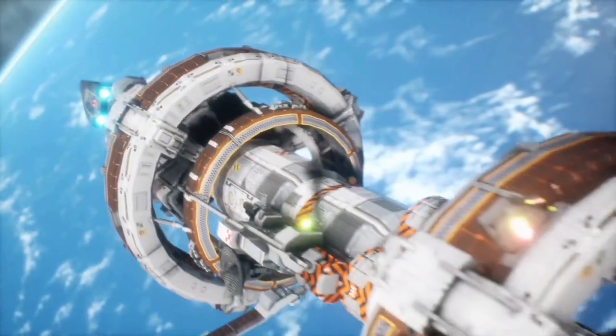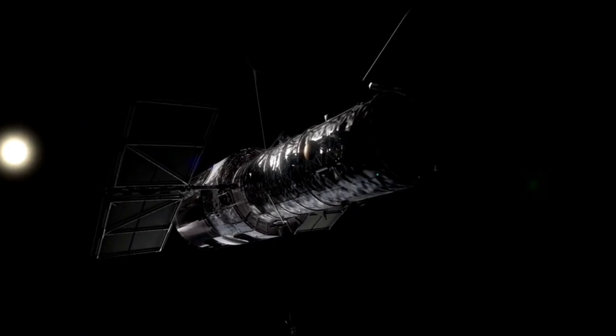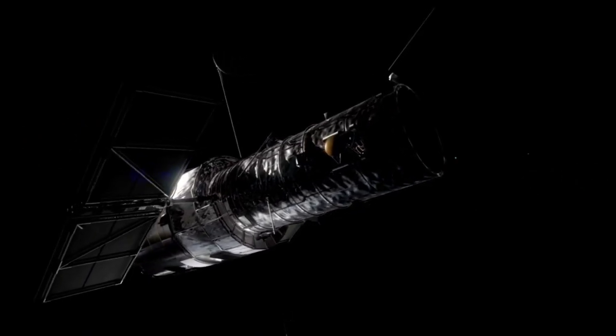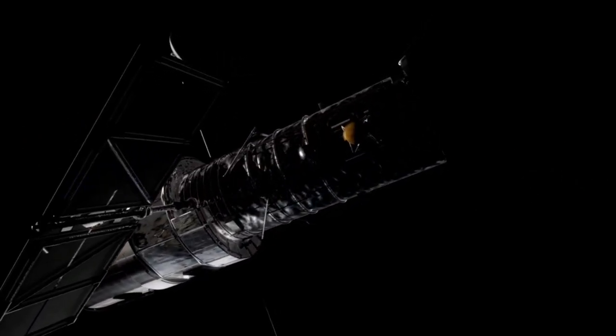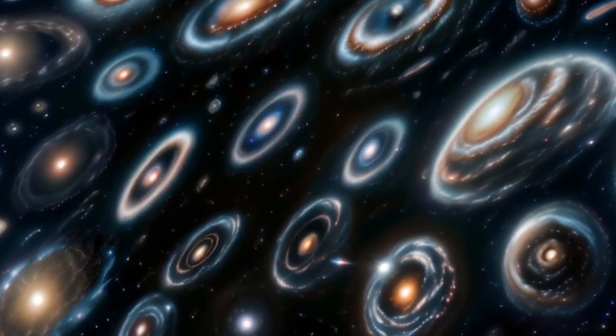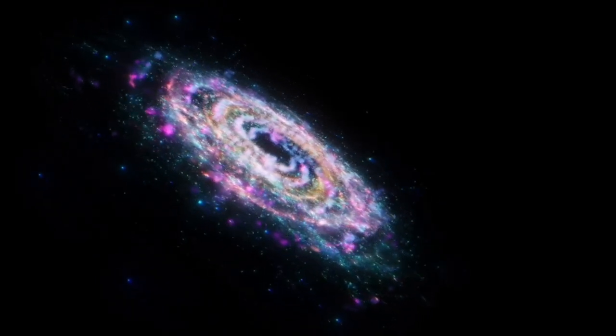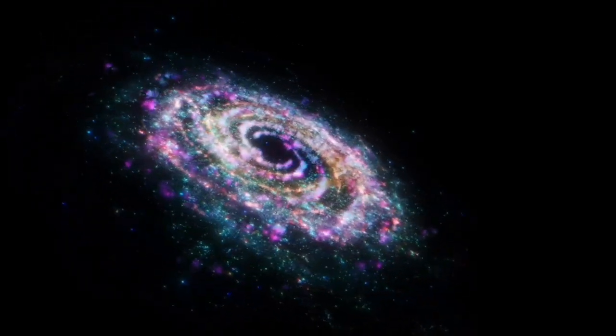NASA's James Webb Space Telescope has made a surprising discovery that has astronomers all over the world in awe. The telescope discovered the universe's earliest known galaxy a few weeks ago. However, it has now discovered something even larger, a supermassive black hole that is distancing itself from its galaxy at an incredible rate of 4 million miles per hour.